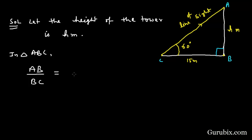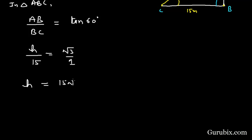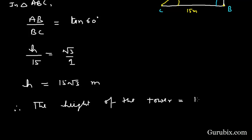Therefore, this relation is tangent. The angle given is 60 degrees. AB is h, BC is 15, and tan 60 degrees equals √3. So if we cross multiply this equation, we get h = 15√3. Therefore, the height of the tower is equal to 15√3 meters. This is the solution of the example.